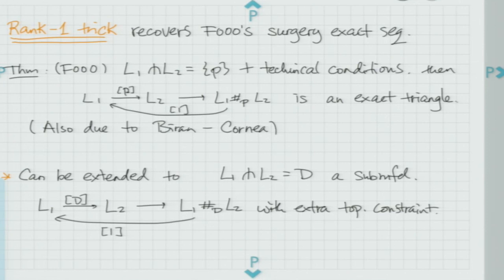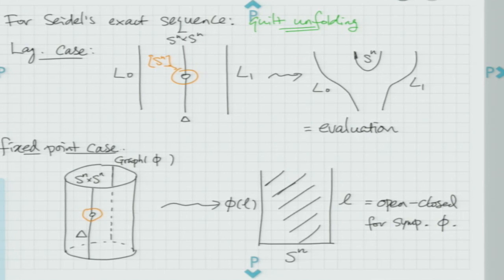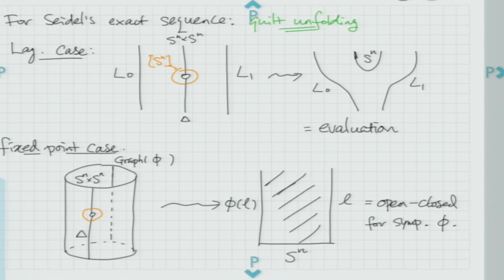This can be extended when L1 and L2 cleanly intersect at a connected manifold. For Seidel's exact sequence, to know the connecting map between the first two factors — the evaluation map as in Seidel's proof — you need to identify rank-one Floer cohomology in degree zero for the diagonal and S^n times S^n. You need to identify this with CF(S^n, L0) and CF(L1, S^n), which requires some quilt unfolding to identify that rank-one morphism with the evaluation map.